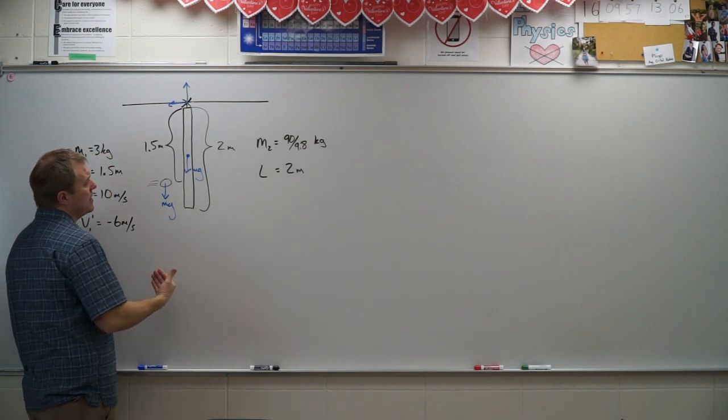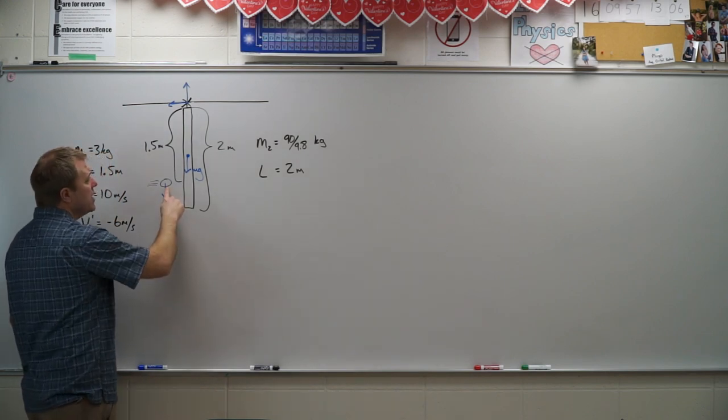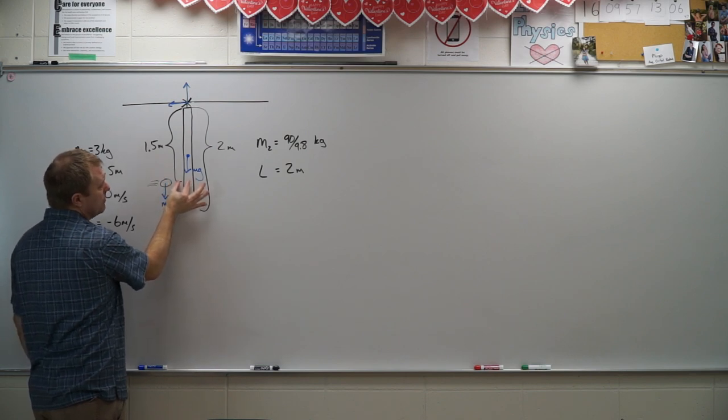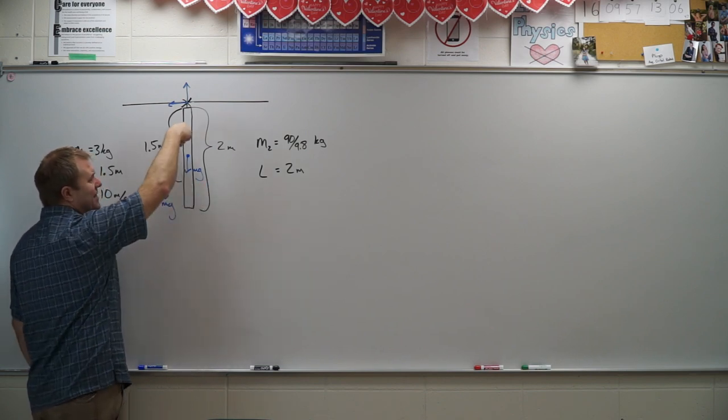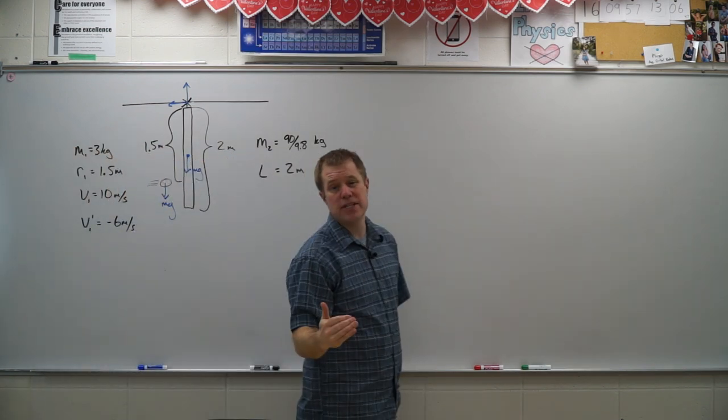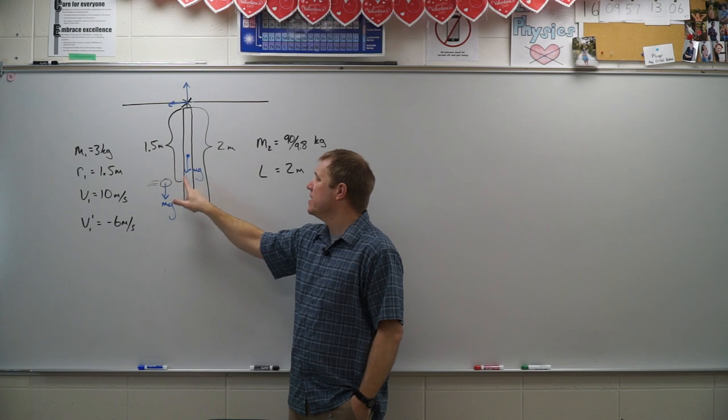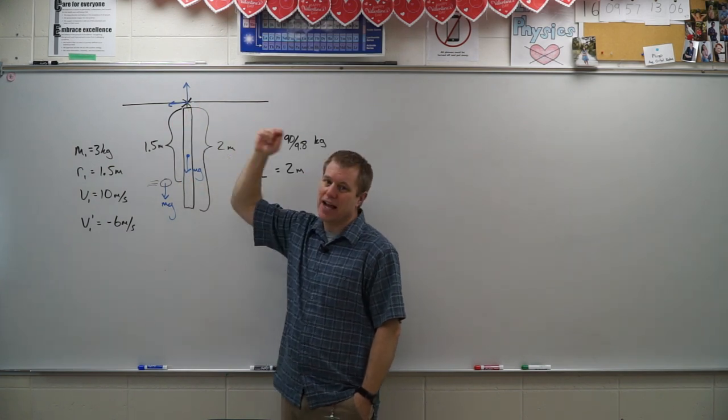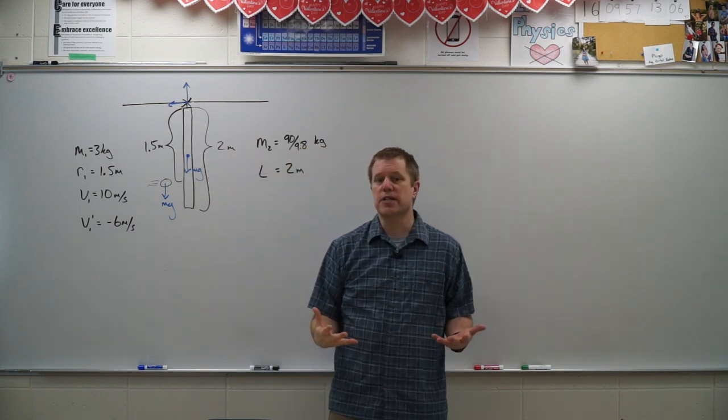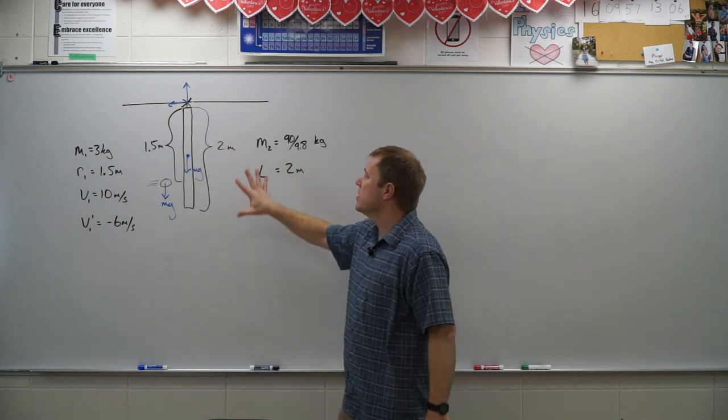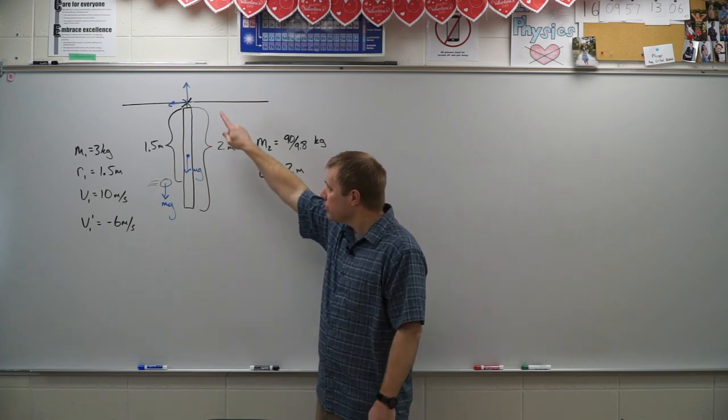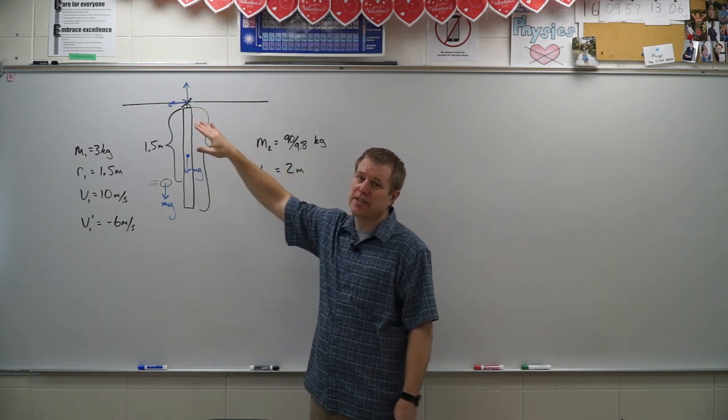The reason I can say angular momentum is conserved is because these two forces, when we get them in the hitting portion of this, both of those are acting parallel to the radius, not perpendicular. So they're not producing any torque. So gravity doesn't produce any torque about this axis of rotation. And these two forces being at the axis rotation don't produce any torque either. And so because there is no external net torque, angular momentum is conserved.